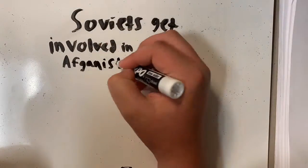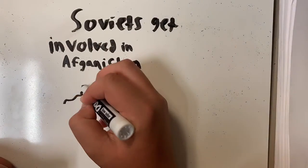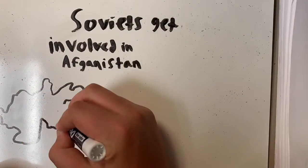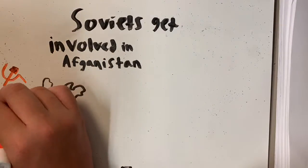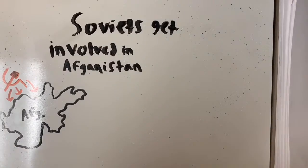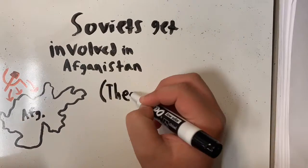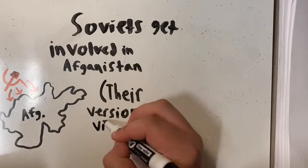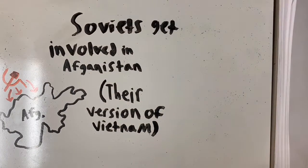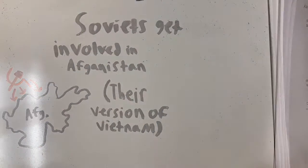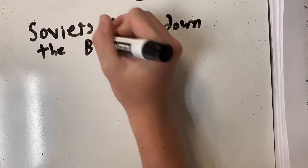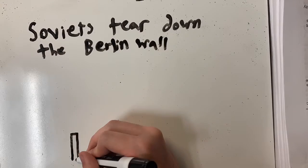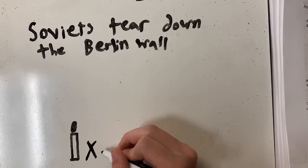Now we get to the end of the Cold War, where we see the Soviets get involved in their own version of Vietnam — the Afghanistan War. And lastly, we move on to the eventual collapse, which was when they tore down the Berlin Wall and reunited Germany in 1989.